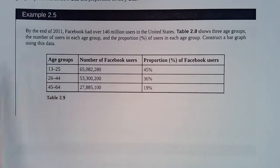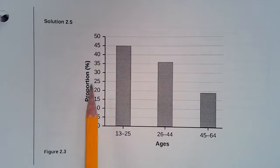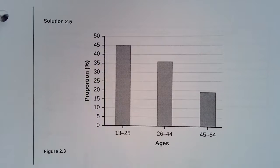Alright, so example 2.5, we have three different age groups, 13 to 25, 26 to 44, and 45 through 64. The number of people in that age group that are Facebook users and the proportion or the percent of Facebook users that that group or that class makes up. So we're going to just take this and present it in a bar graph. Alright, so we have the 13 to 25 age category making up 45% of the Facebook users. And then our other two ones corresponding with their percentage of Facebook users.